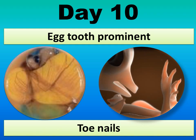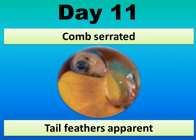On day ten, the nictitating membrane is prominent and toenails appear. On day eleven, the comb is serrated and tail feathers are apparent.